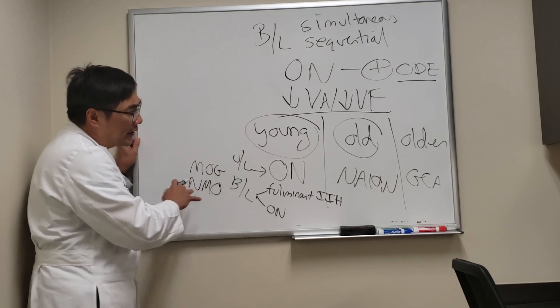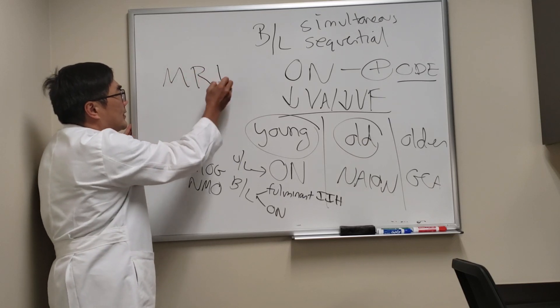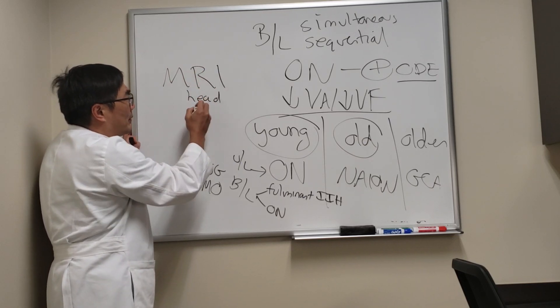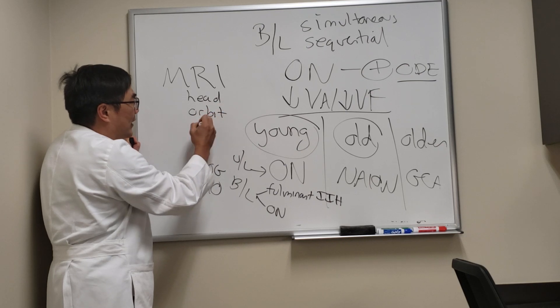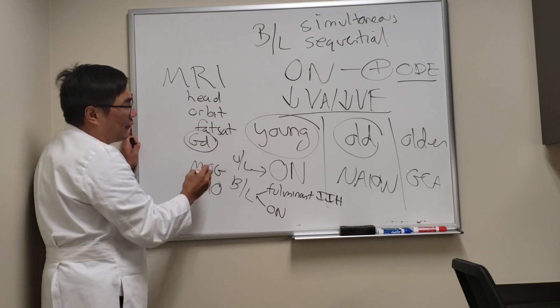The way we're going to differentiate these entities is we're going to start with the imaging study, and that means MRI of head and orbit with gadolinium and fat saturation. We're looking for enhancement.